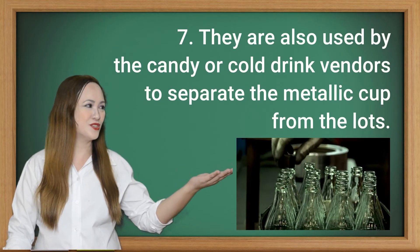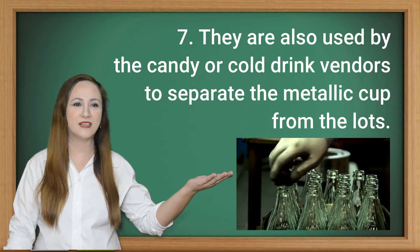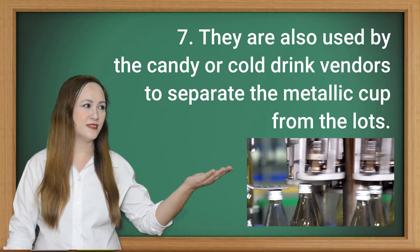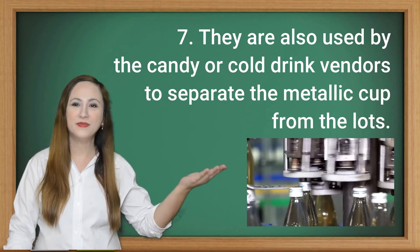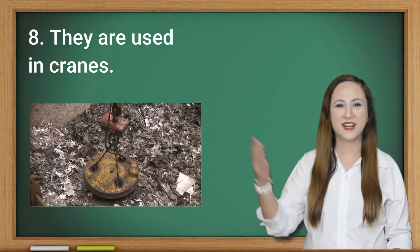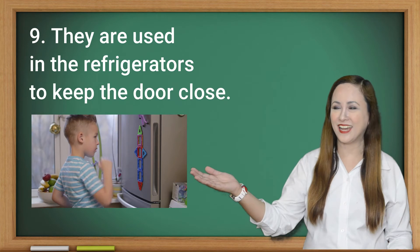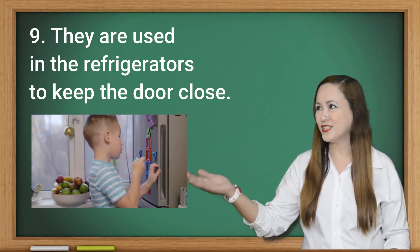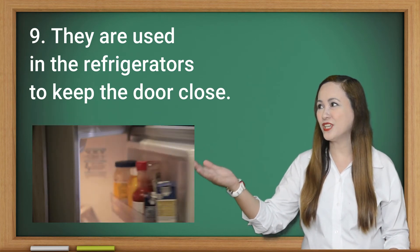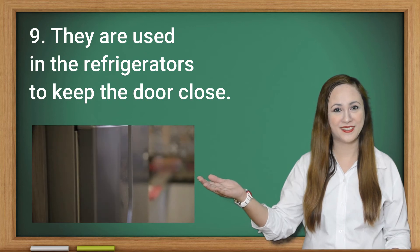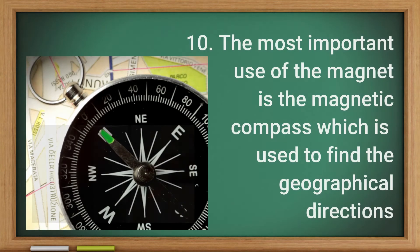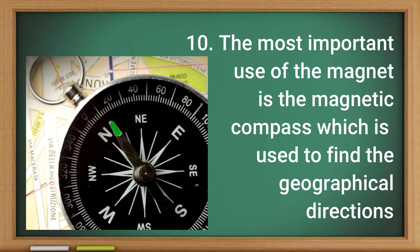Number seven, they are also used by candy or cold drink vendors to separate metallic cups from the rest. Number eight, they are used in cranes. Number nine, they are used in refrigerators to keep the door closed. And number ten, the most important use of the magnet is the magnetic compass, which is used to find geographical directions.